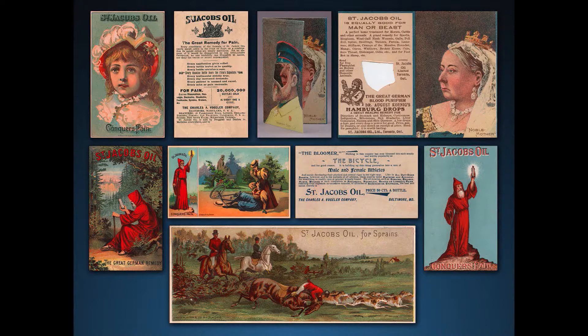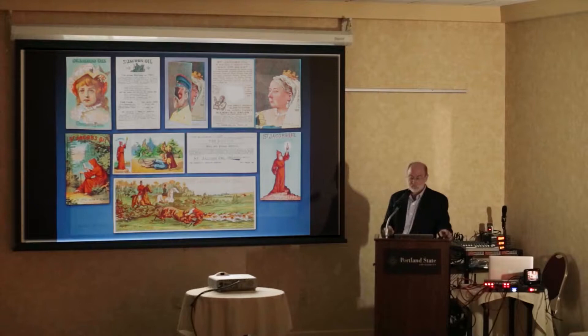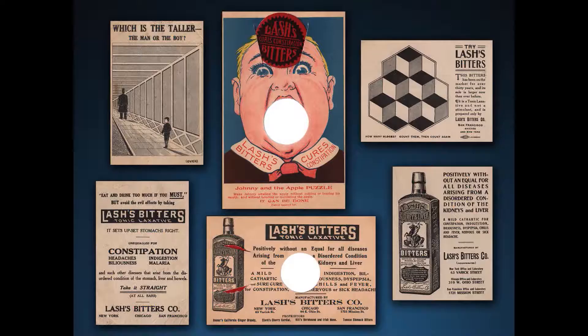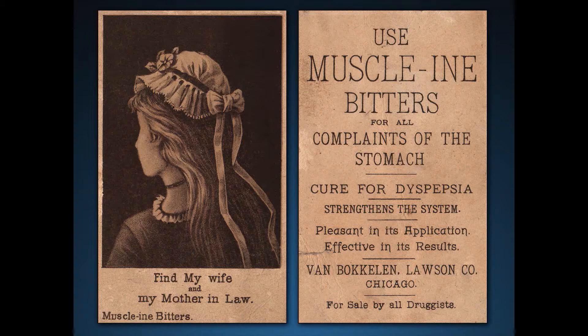Here's St. Jacob's Oil, which was popular in both this country and England. They would come with great puzzles and things like that — the cover showed the son, you'd open it up and there was the noble mother, Queen Victoria inside. It was geared toward all kinds of sprains, problems, scalds, and internal troubles. There were all kinds of different handbill puzzles passed out in the apothecary or pharmacy. And of course this one's a favorite — on the left-hand side it says, 'Find my wife and my mother-in-law.' Can you see it if you squint?